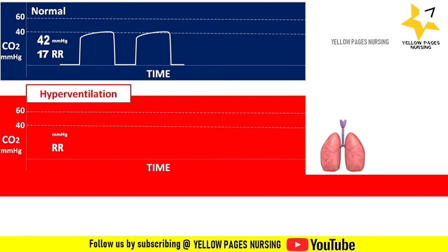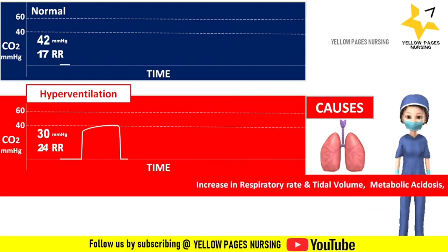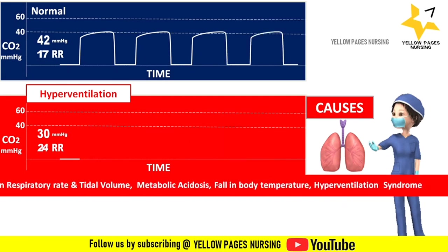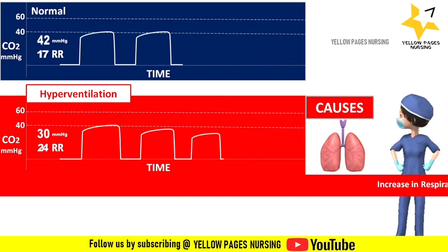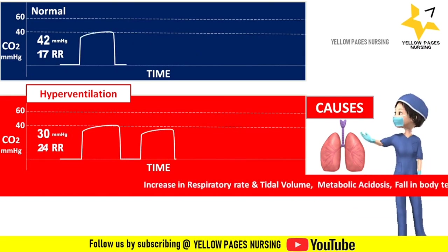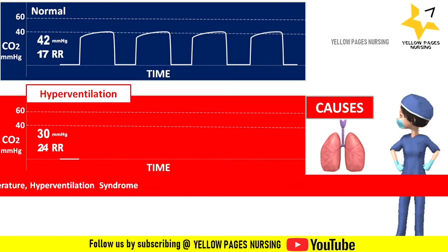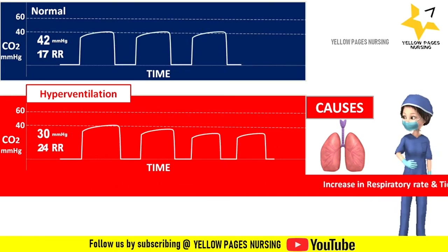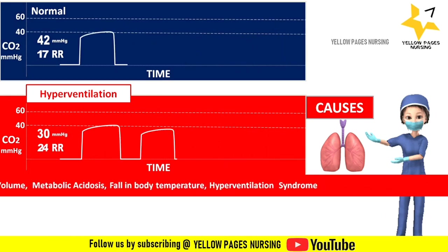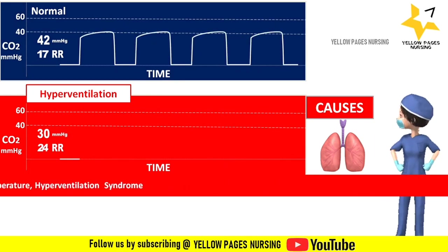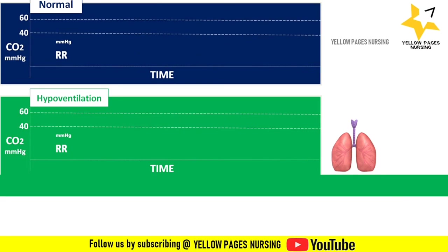Next is the waveform denoting hyperventilation. The ETCO2 reading is initially within the normal range, but as the respiratory rate increases, the ETCO2 reading drops and the waveform becomes narrower. Causes of hyperventilation include increased respiratory rate and tidal volume, metabolic acidosis, fall in body temperature, pulmonary embolism, and hyperventilation syndrome. This image shows the short-term trend; the long-term trend waveform becomes even narrower.